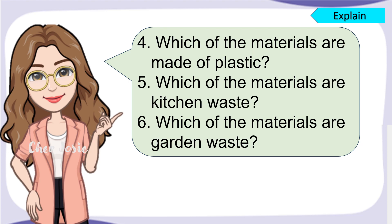Which of the materials are made of plastic? Very good! We have the plastic gloves, the empty alcohol bottle, and empty drinking bottle. Which of these materials are kitchen waste? Very good! We have leftover foods, banana peel, onion, tomato, and calamansi.